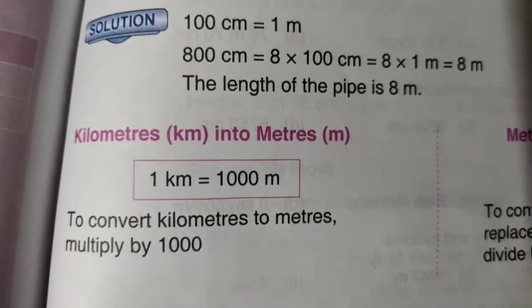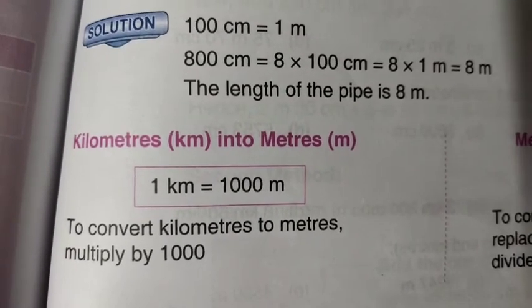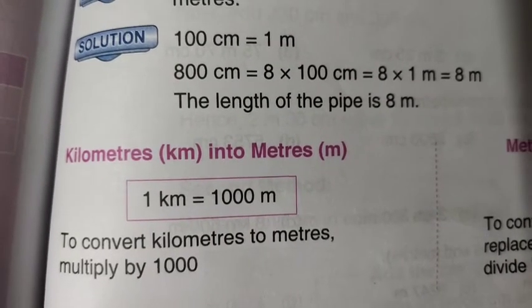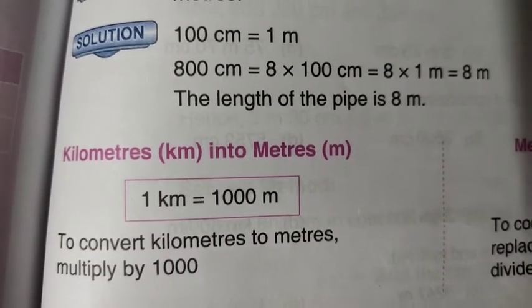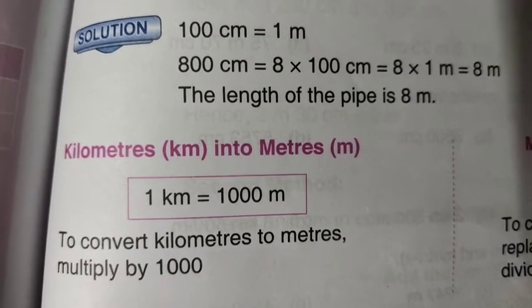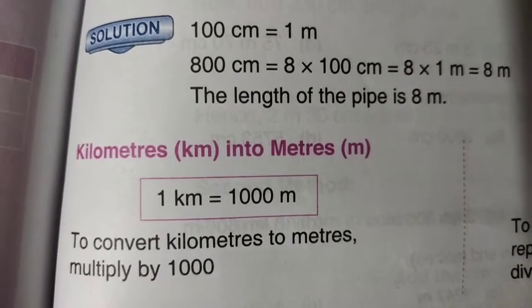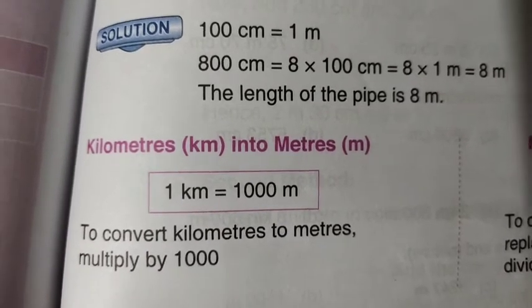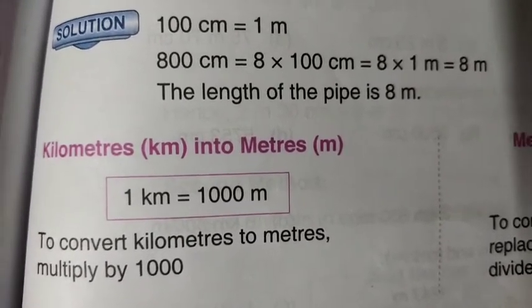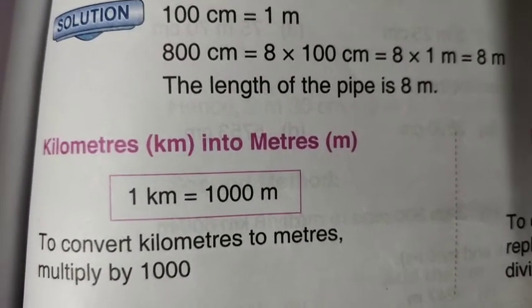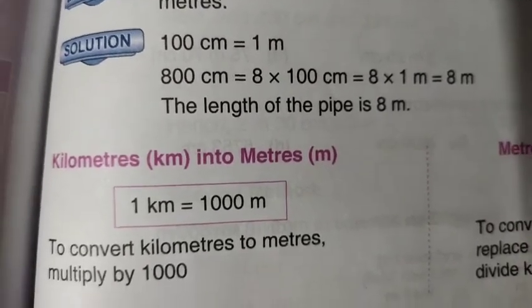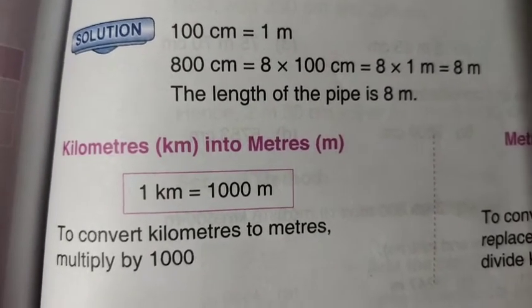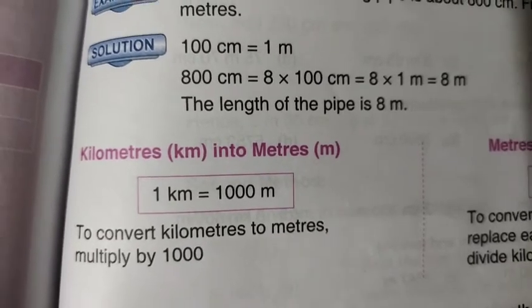For example, if there is 2 kilometers, to convert it to meters: 2 × 1000 = 2000 meters. 3 km × 1000 = 3000 meters. 4 km × 1000 = 4000 meters.